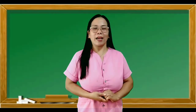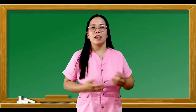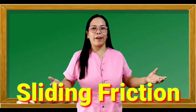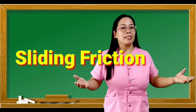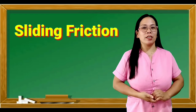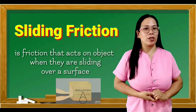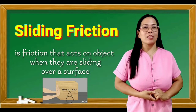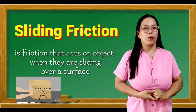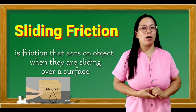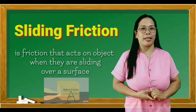The second type of friction is sliding friction. Sliding friction is friction that acts on an object when they are sliding over a surface.